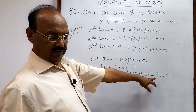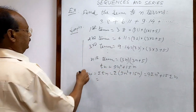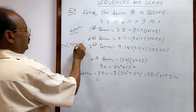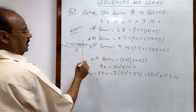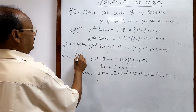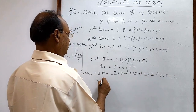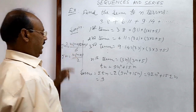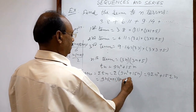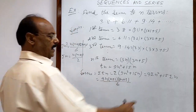As discussed in previous videos, the formula for Σn² is n(n+1)(2n+1)/6, and the formula for Σn is n(n+1)/2. Substituting: the first term becomes 9 × n(n+1)(2n+1)/6.